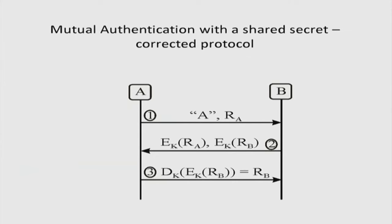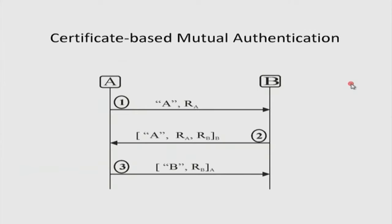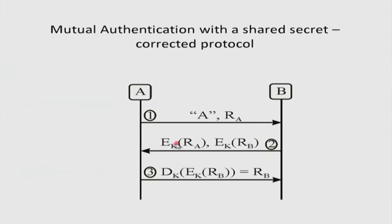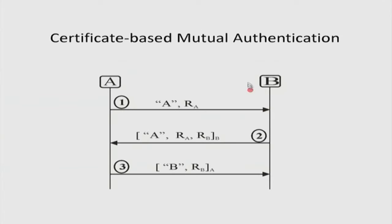So what have we talked about so far: one-way authentication using a common long-term secret, one-way authentication using certificates, mutual authentication using a long-term secret K, and now mutual authentication using certificates.